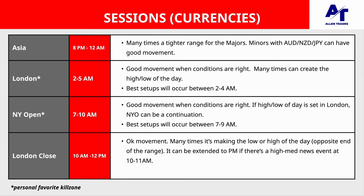Moving on to London Close, there's okay movement — it's not going to be as volatile as London Open and New York Open unless there's some high or medium impact news event. Many times it's going to make the opposite end of the range, so if London made the high of the day, London Close many times will make the low of the day. If there is a high or medium impact news event at 10 or 11 AM, then it can be extended to 1 PM — so instead of 10 AM to 12 PM, London Close can extend to 1 PM.